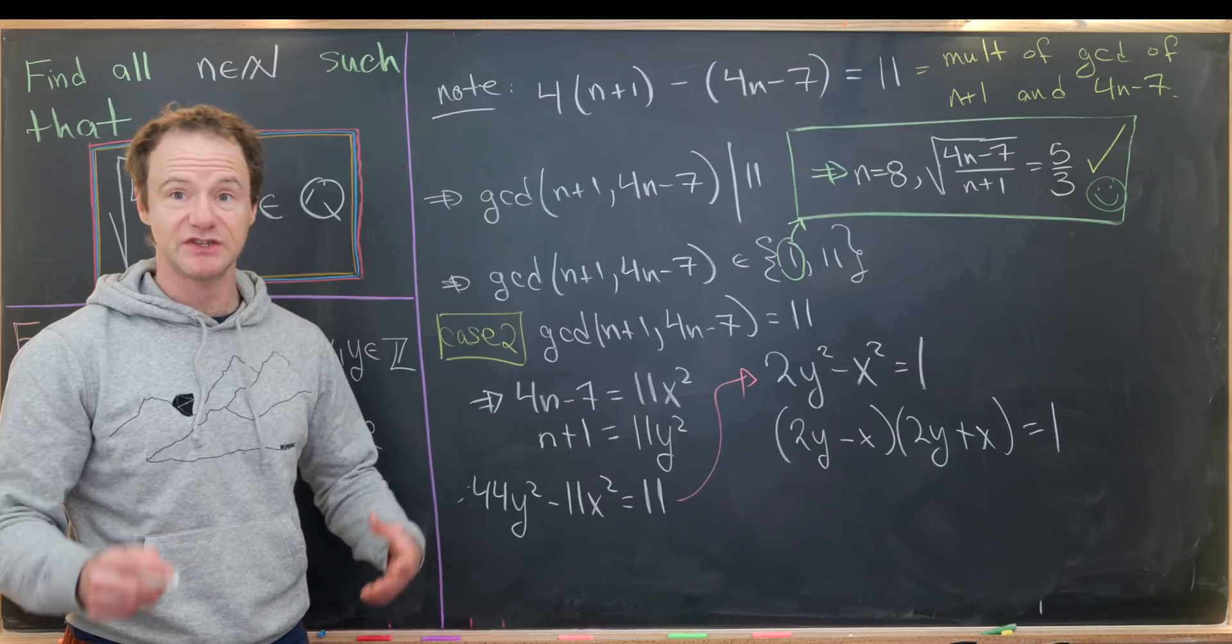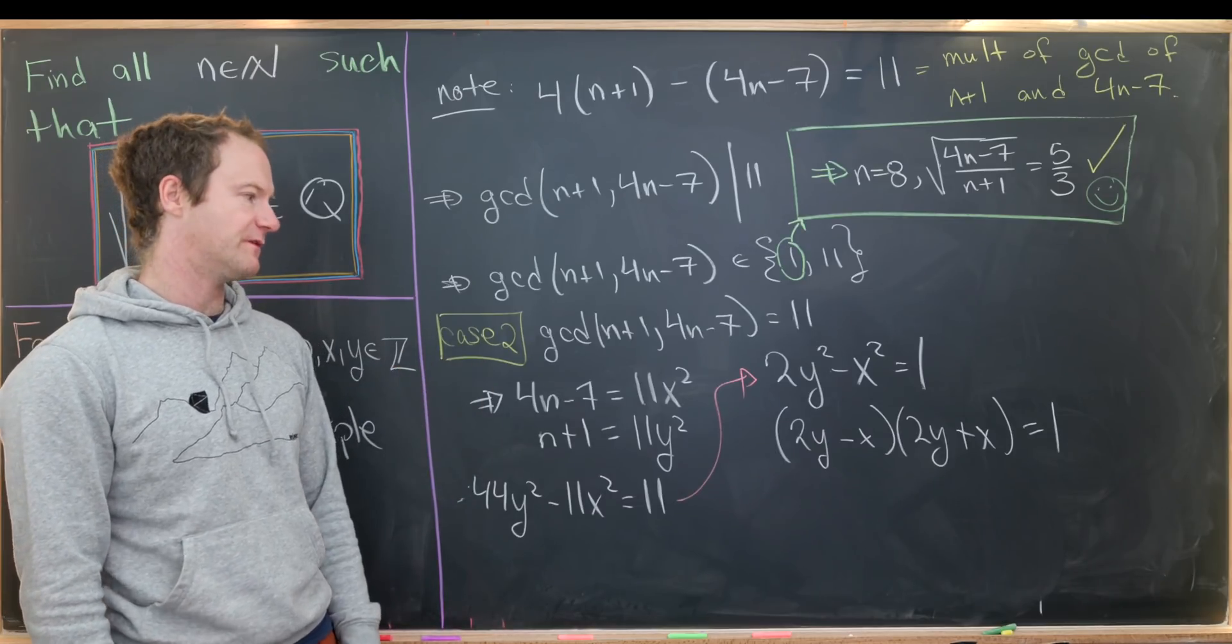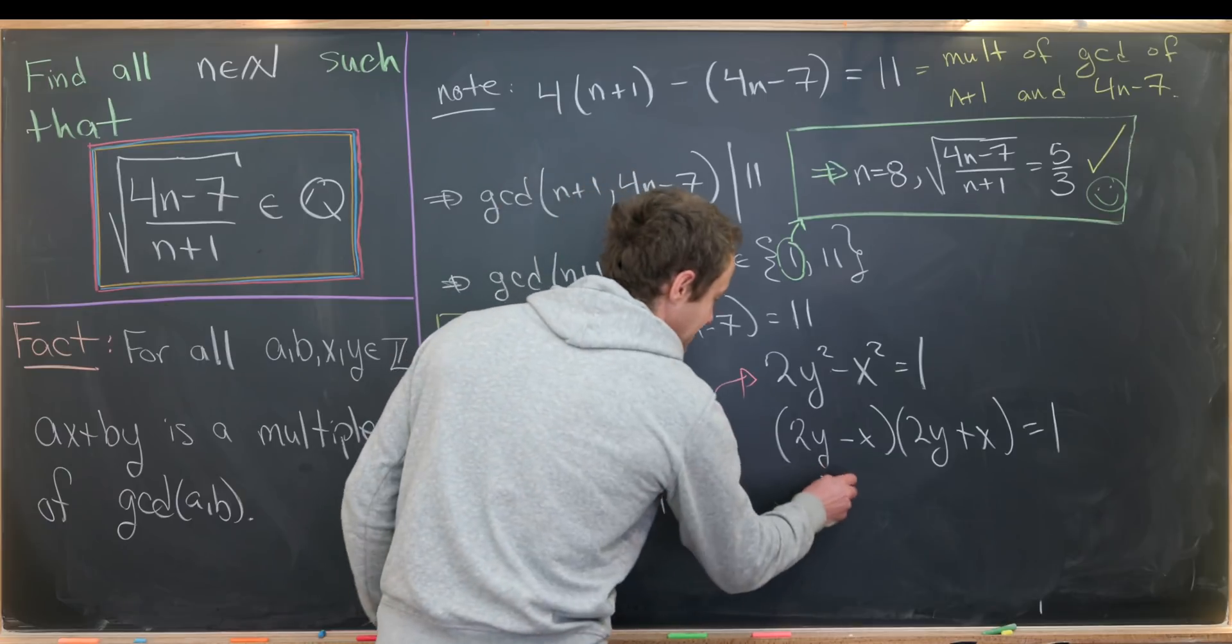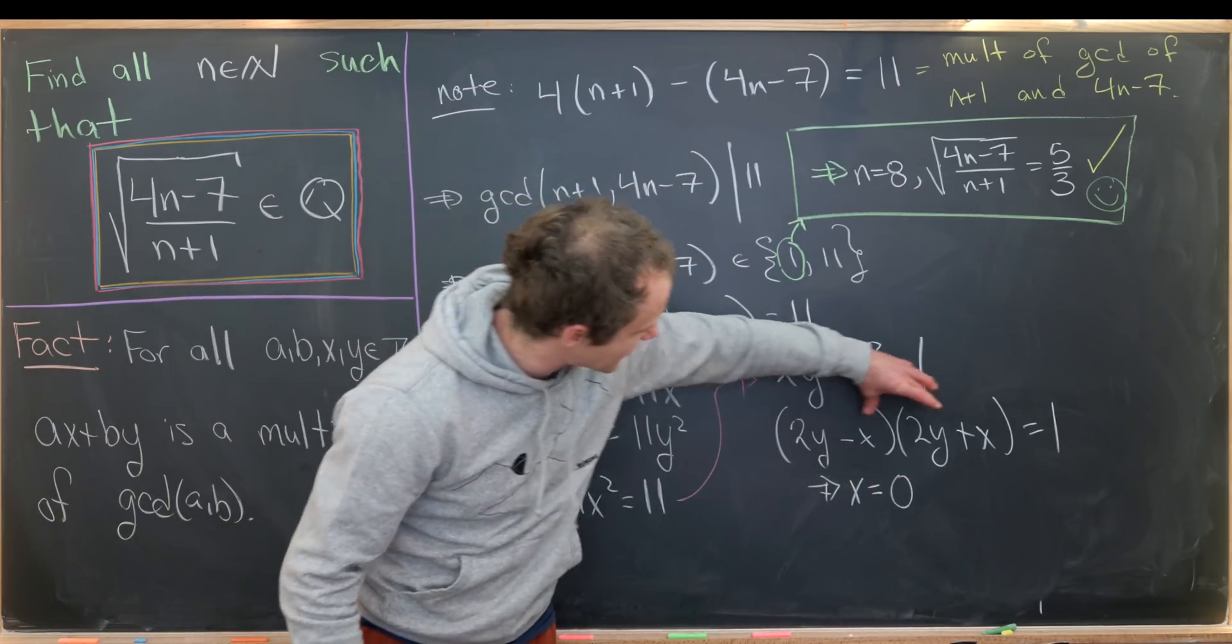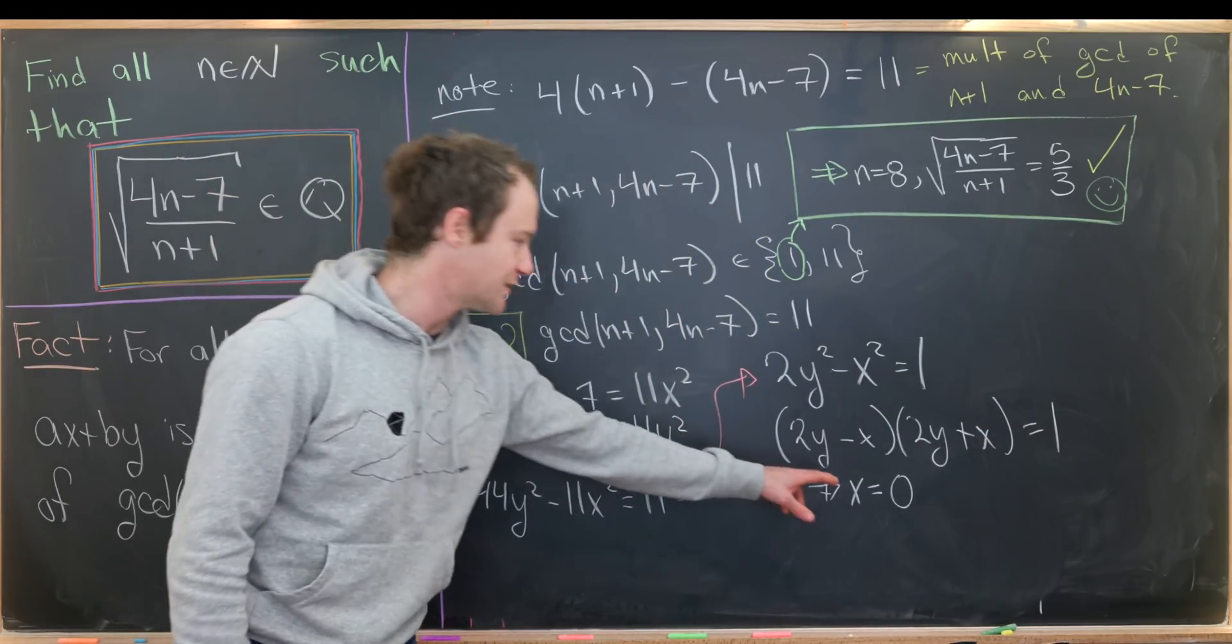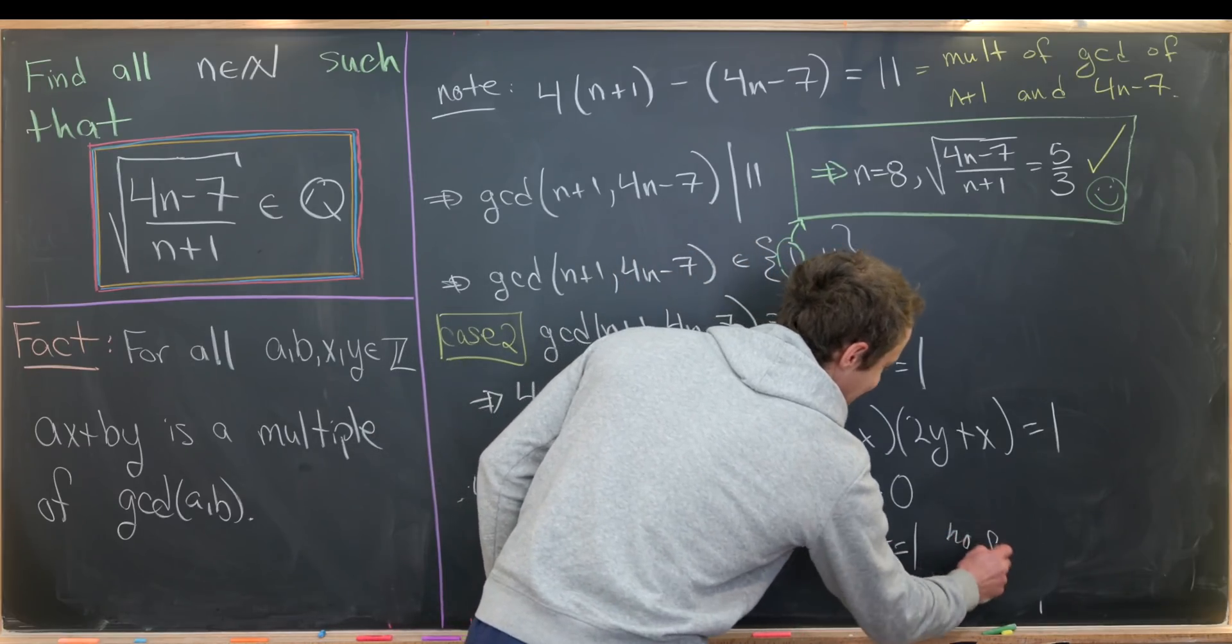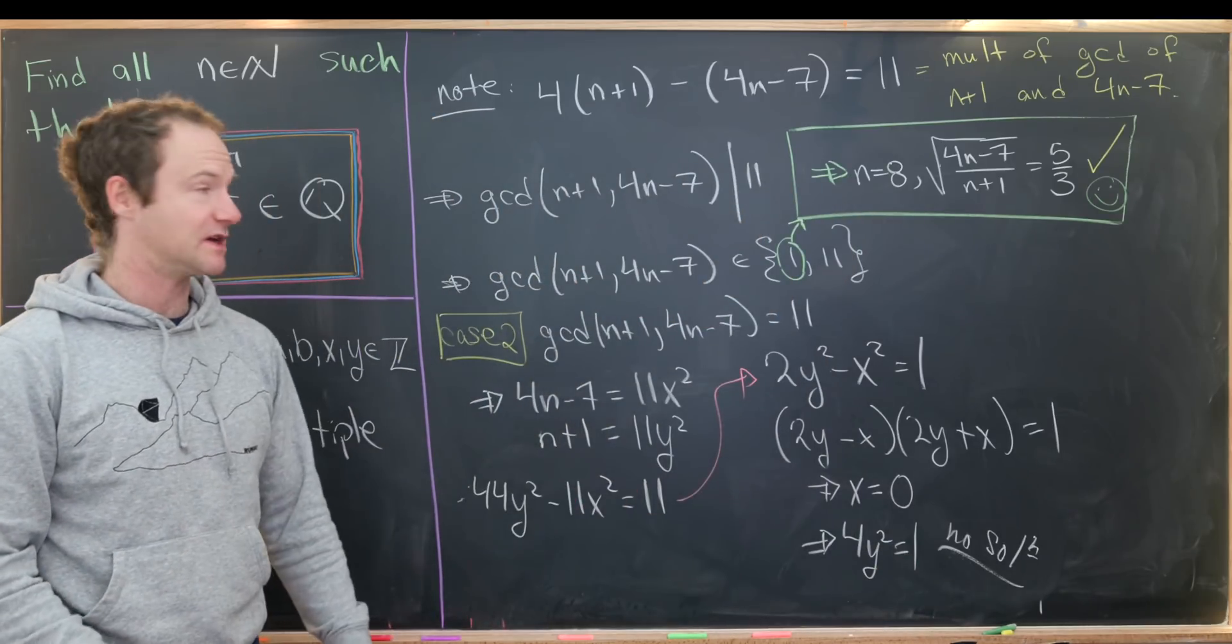But the only way to multiply two integers and get 1 is for both of them to be 1 or both of them to be -1. But that means these two guys must be equal. If these two are equal, that tells us that x has to be equal to 0—we can see that just by setting this guy equal to this guy and subtracting the 2y. But if x = 0 plugged back up into this equation, we see that 4y² = 1, which has no solution since our value of y must come from the integers.